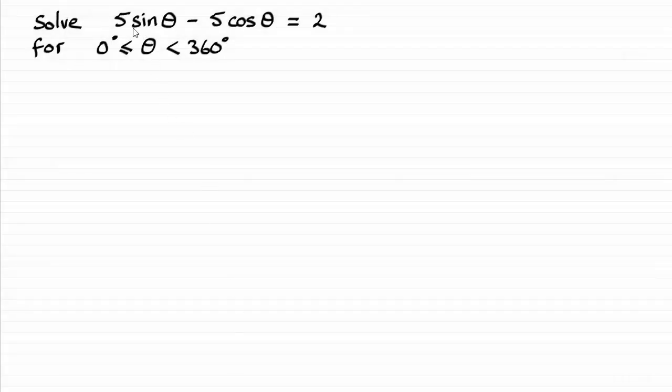Now in this question we're asked to solve this trigonometric equation: 5 sine theta minus 5 cosine theta equals 2, in this range. And there's several ways that we can do this.